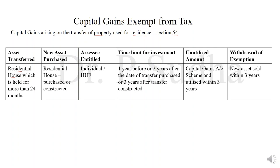The residential house which he is selling must be held by him for more than 24 months. That is, from the date of purchase till the date of sale, at least 24 months he must be the owner of the asset. He must have used the asset for residential purpose. When he sells this asset, he will get a capital gain. This capital gain will be exempted if he invests the capital gain in purchasing a new residential house. He can purchase the house or he can construct the house. So, he is selling a residential house and buying a residential house out of the capital gain — then this capital gain will be exempted.